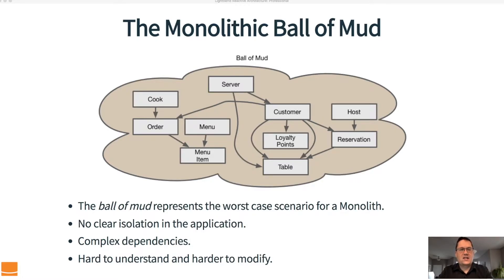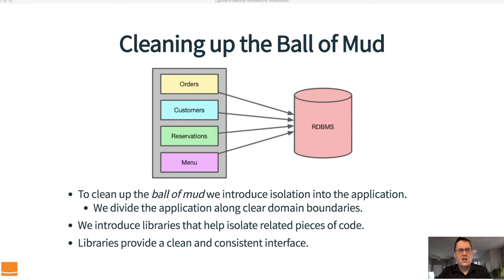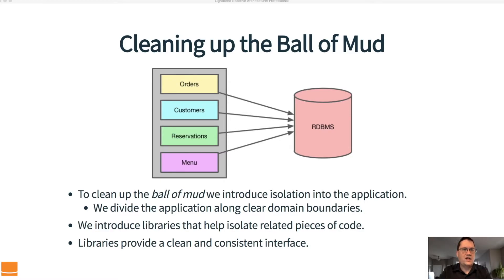So when we see this kind of application — this monolithic ball of mud — we're tempted to clean it up. To clean up the ball of mud, we introduce isolation into the application. We divide the application along clear domain boundaries. We've taken our ball of mud where everything depended on everything else and said there is a particular section that deals with orders, one for customers, one for reservations, one for the menu. These different sections may exist as packages, libraries, or some other manner of separation, but the point is that we've created very clear domain boundaries within our application. Libraries are a pretty common way to do this.